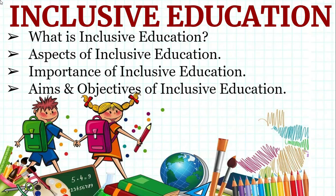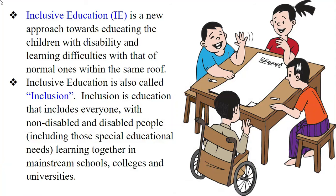Inclusive education is a new approach towards educating children with disabilities and learning difficulties together with normal children within the same roof. There are multiple disabilities, mainly physical disabilities like hearing impairment, vision impairment, mental disorder, and learning difficulties like dyslexia, dyscalculia, and dysgraphia. In this approach, normal and disabled children both study together.